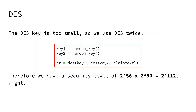Imagine you do a double DES: you take two random keys, encrypt the plaintext with the first key, and then encrypt that ciphertext with a different key. Therefore, I have used DES twice, so I should have a security level of 2 to the 56th times 2 to the 56th, right? Because I've used two independent keys.